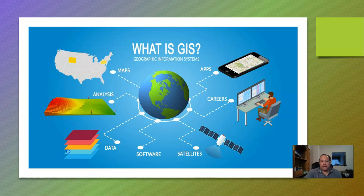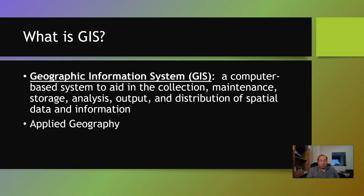On a more specific definition basis, Geographic Information Systems is a computer-based system to aid in the collection, maintenance, storage, analysis, output, and distribution of spatial data and information. If we want to get much less complicated, it's applied geography at its simplest — applied geography where we use spatial analysis and data to provide users with information.